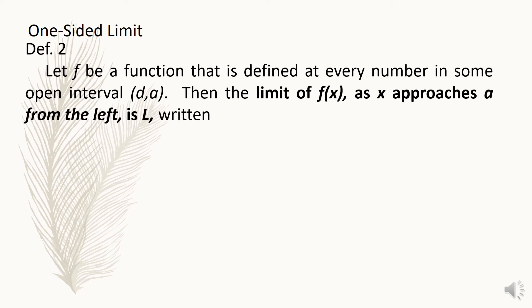Definition 2. Let f be a function that is defined at every number in some open interval dA. Then the limit of f of x as x approaches a from the left is L. The negative exponent indicates that the values of x are coming from the left of a. As the values of x approach a from the left, f of x approaches L.